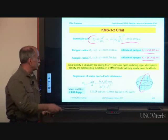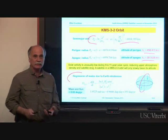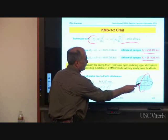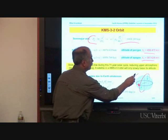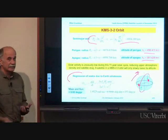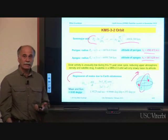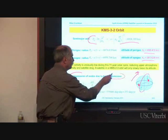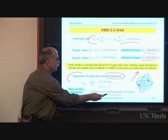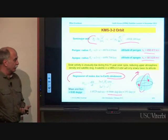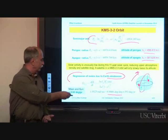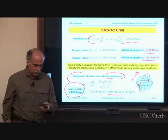The next thing we can calculate is the regression of nodes — the rotation of the line of nodes. The line of nodes connects the position of the ascending node, where the orbit crosses the equator going north, with the descending node going south. This line of nodes rotates due to the oblateness of the Earth. For this satellite we immediately get the answer: 0.966 degrees per day, or roughly 353 degrees per year. The effect of the Moon and Sun is very small and can be disregarded.